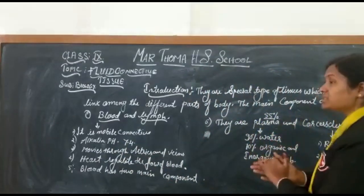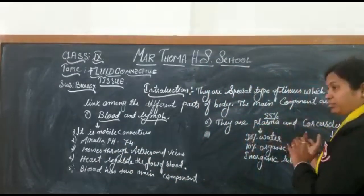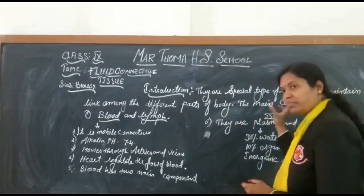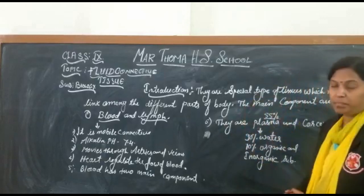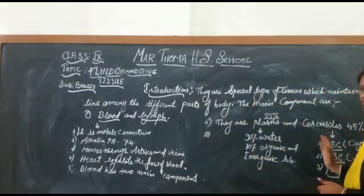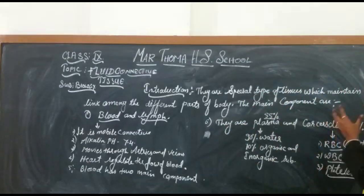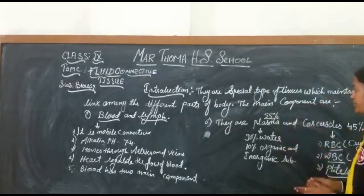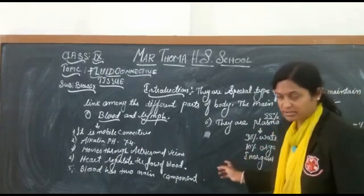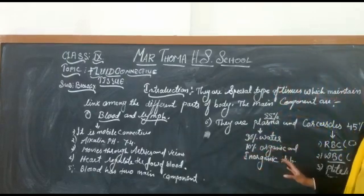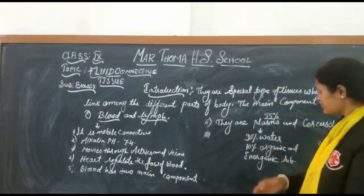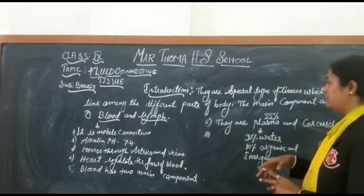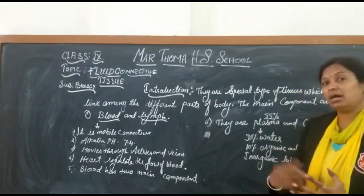Plasma is the fluid part of the blood, and corpuscles are the cells present in the blood. About 55% of the blood is plasma and about 45% is corpuscles. Plasma contains 90% water and 10% organic and inorganic substances, such as salts, proteins, cholesterol, enzymes, and hormones.